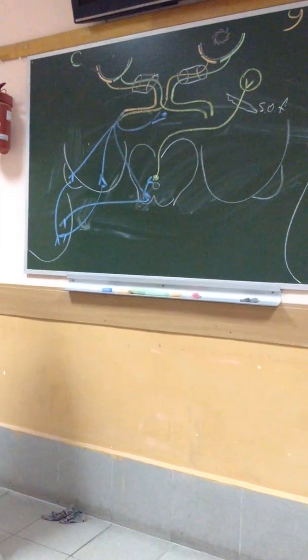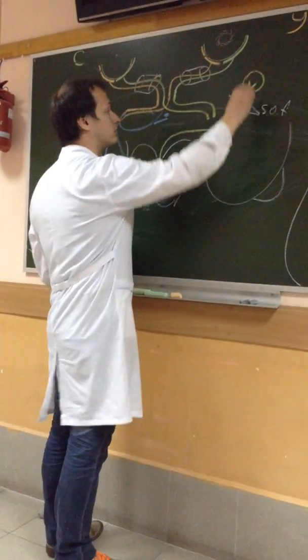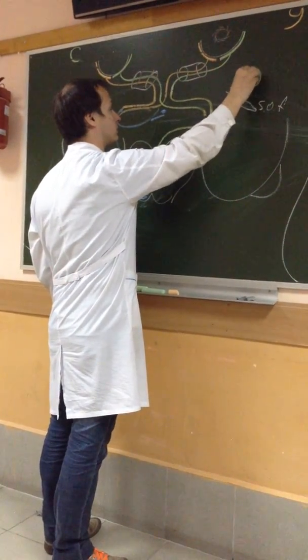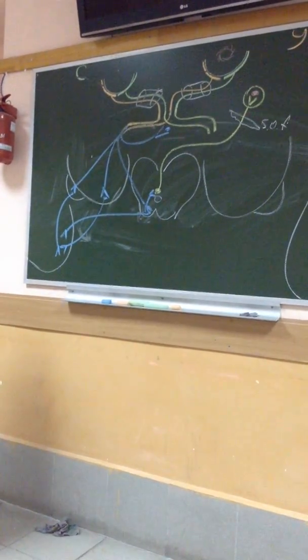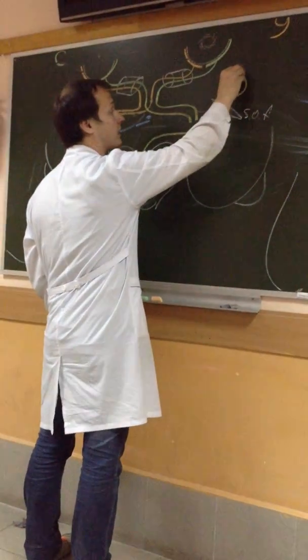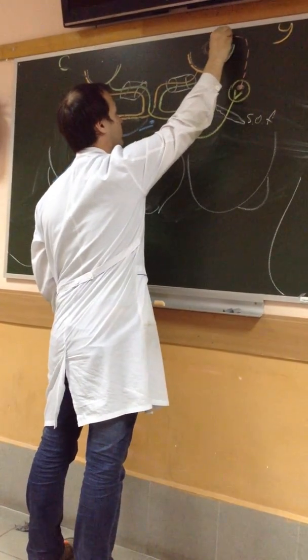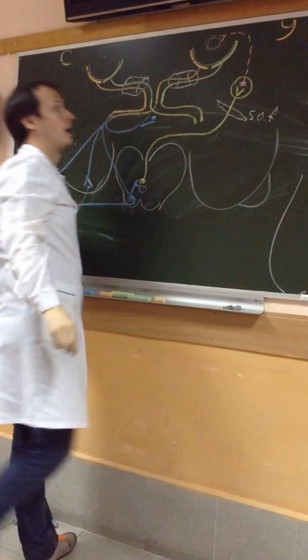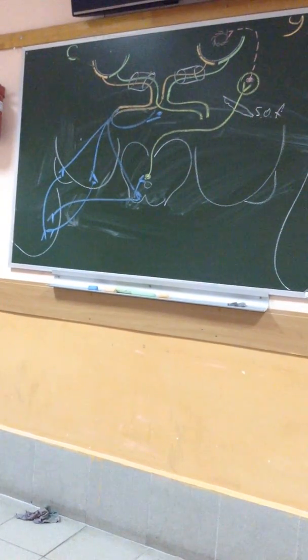In the ciliary ganglion, we locate the motor neurons of the vegetative nervous system, of the parasympathetic nervous system. And the axon of this neuron comes to the eyeball and stimulates the musculus sphincter pupillae.